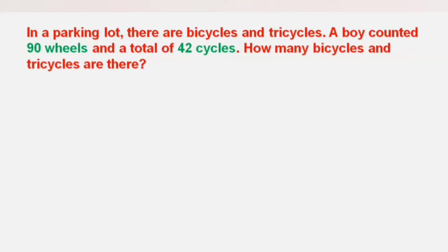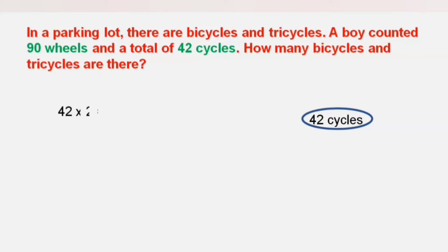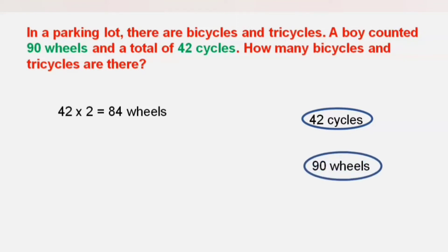In this question it is given that there are 42 cycles. Remember, either for a bicycle or a tricycle there should be a minimum of two wheels. So for these 42 cycles there should be compulsory 42 into 2, that is 84 wheels, but it is given that 90 wheels are there. That means 90 minus 84, which is 6 wheels, are extra.